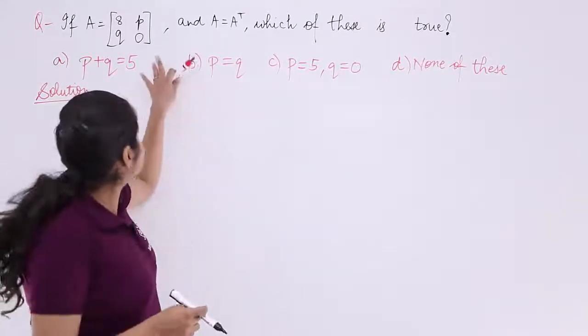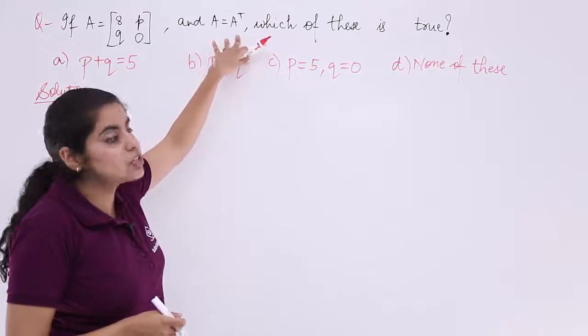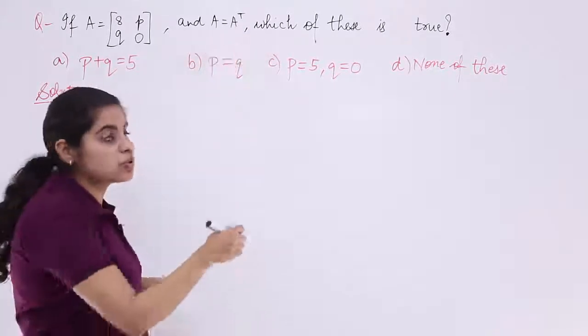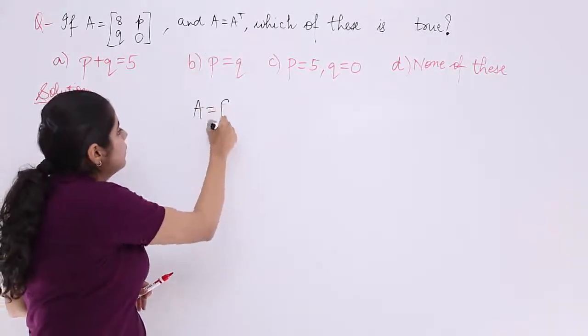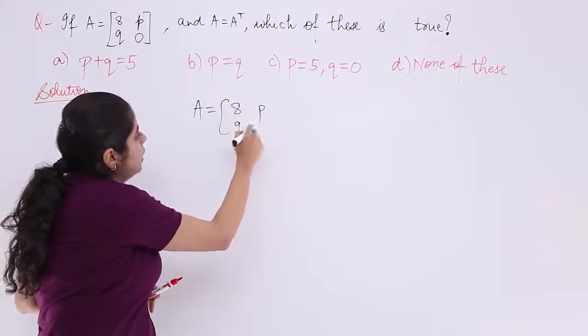The solution heading is already written. Let's see this condition A is equal to A transpose. A is the given matrix that is 8, P, Q, 0.